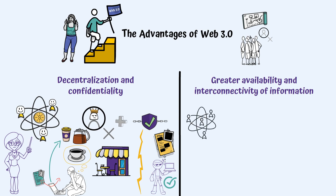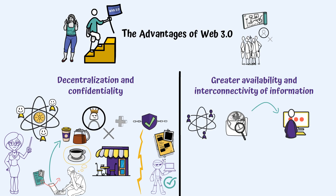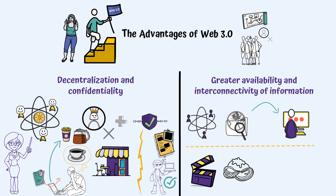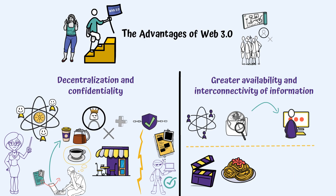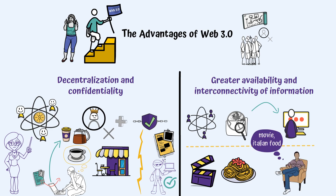Greater availability and interconnectivity of information: taking into consideration the decentralized network of Web 3.0, larger sets of data would be available, which means there would be more information that the algorithm could analyze simultaneously. This would help users get info that is more accurate and specific. For example, let's say you want to watch a movie and order Italian food at the same time. If Web 2.0 needs you to do several searches, Web 3.0 should act as a personal assistant — you just say the complex sentence and it will respond by analyzing not only the words you say and their order, but also their meaning.